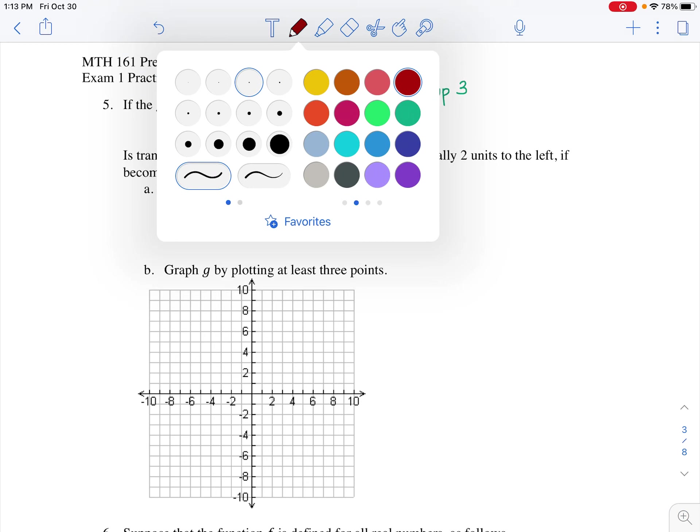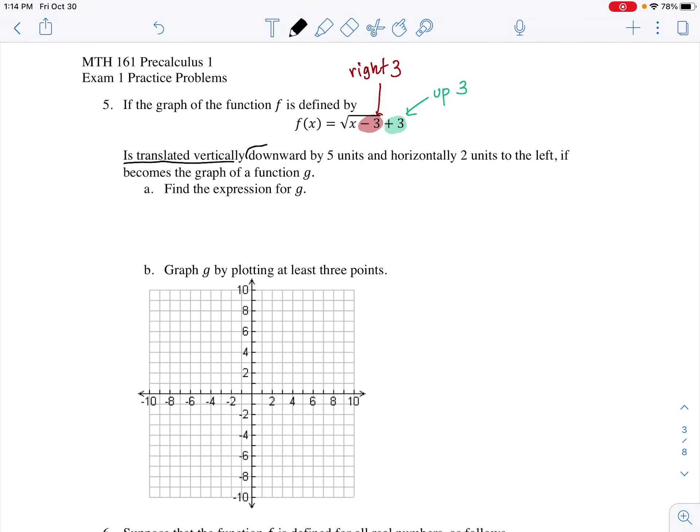But it says that this graph is getting translated vertically downward by five units, and then horizontally two units to the left. So I'm going to add a couple more things to this f(x) to get this new graph g. So g(x) is equal to, and I'll draw my square root and write down x minus three inside and plus three outside. That's the original f(x), but I'm going to add a couple more things to it. First of all, downward by five units.